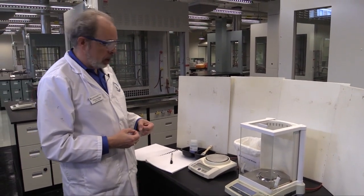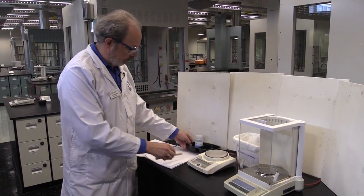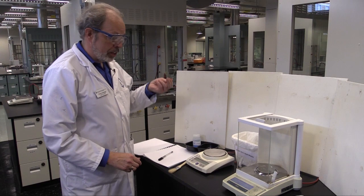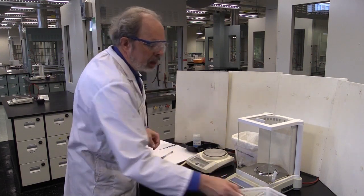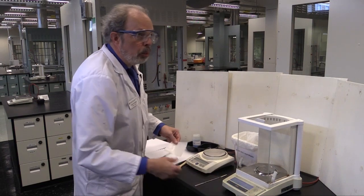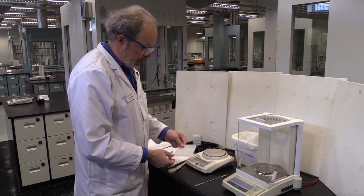Now what you will need when you are weighing is chemical, your notebook and a pen, a spatula and a weighing paper. You can also use a watch glass or a small beaker. I'm going to use a weighing paper here.